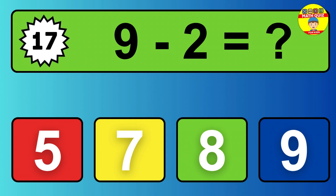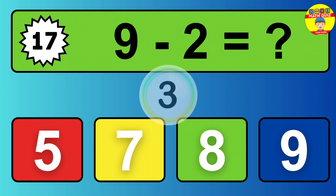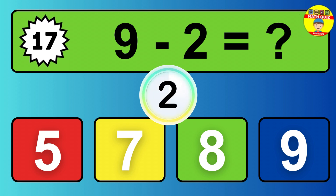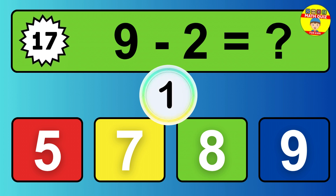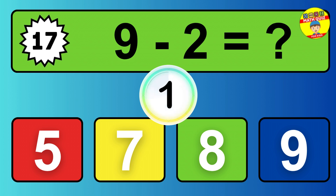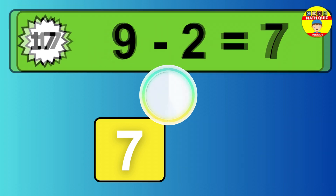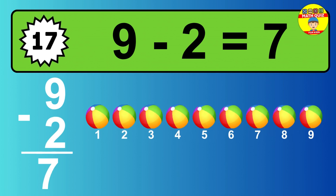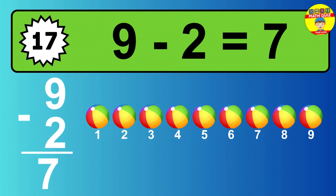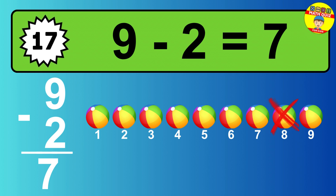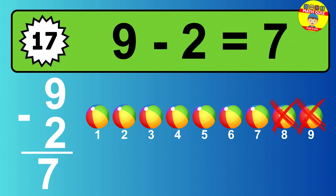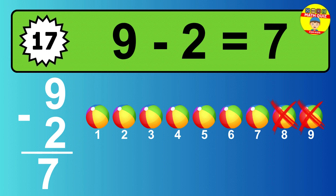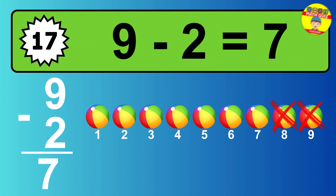Question seventeen. Nine minus two equals what? So the answer is, nine minus two is seven. Let's count it. One, two, three, four, five, six, seven.